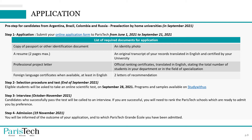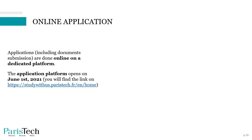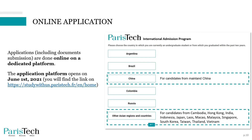Once you are admitted at a PariTech Grande École, if you are not fluent in French, that is when you should start learning French as soon as possible. Applications, including document submission, are entirely done online on a dedicated platform. The application platform opens on June 1st and will remain open until September 21st.